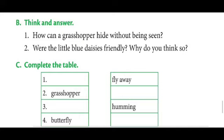Second question: were the little blue daisies friendly? Why do you think so? No, the blue daisies were not friendly. They did not allow the ladybird, the grasshopper, or the bumblebee to sit down. The little blue daisies told all of them to go away from the garden. From all this we can understand that the little blue daisies were not friendly to anyone.